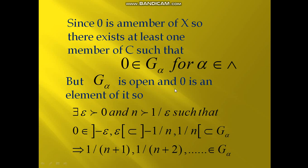G_α is an open set and 0 is an element of this open set. So we can find a natural number N ≥ 1/ε such that 0 belongs to (-ε, ε), which is a subset of (-1/N, 1/N), which is a subset of G_α. For example, if ε = 0.01, then 1/ε = 100, and so we can take N = 1000. In this way this interval (-1/N, 1/N) lies inside G_α.